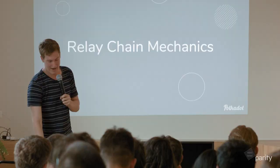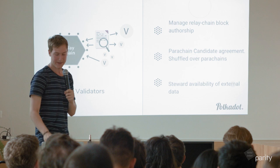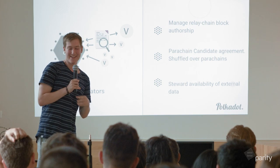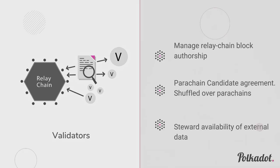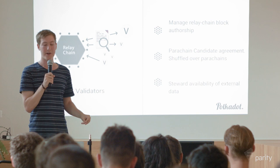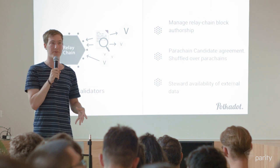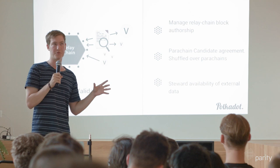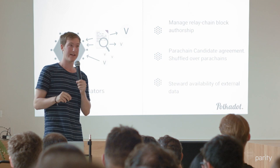Let's talk about the relay chain mechanics and the four roles. First, validators author relay chain blocks. They do candidate agreements over parachains — a collator gives a validator a parachain candidate, the validator passes it around with other validators, comes to agreement, and gets minimal economic attestations for security. They also provide availability for external data like proofs that are too large to store on-chain. Validators are shuffled every block or few blocks, switching which parachain they look at, so every validator looks at one parachain at any given time.